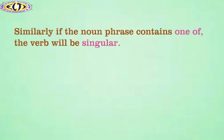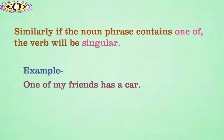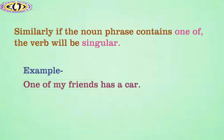Similarly, if the noun phrase contains 'one of', the verb will be singular. For example, one of my friends has a car. Here, we can see that the subject is a phrase that contains 'one of', so it takes singular verb.